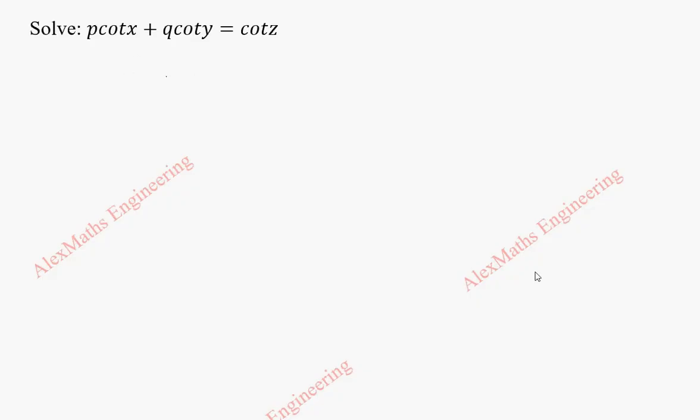This is of the form capital P into small p plus capital Q into small q equal to capital R. Now rewriting this equation, first term is cot x into small p.